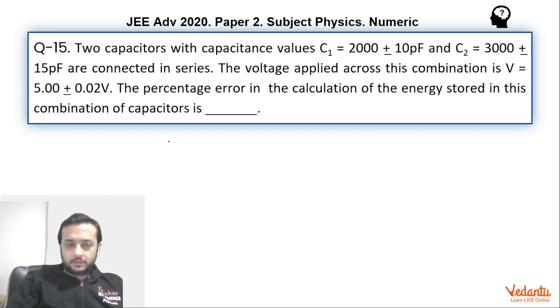If you see, energy we define as half C equivalent into V square. Now dU by U, which is the fractional error in the energy, can be written as dC_equivalent upon C_equivalent plus 2 dV by V by the concept of errors. dV by V is straightaway easy to find. You can see over here it is 0.02 upon 5. So we will substitute it over here in a while.